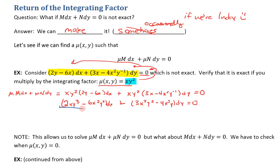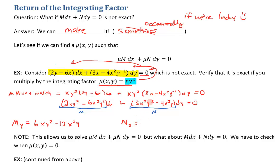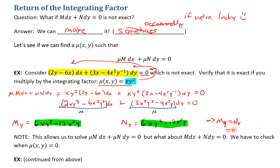Now let's show that this is exact. If this first term is my M, then M_y is 6xy² − 12x²y. And if this second term is my new N, then N_x would be equal to 6xy² − 12x²y. You can see that these two are equal, which implies M_y equals N_x, meaning that it is exact — now, after we've multiplied in this integrating factor μ.